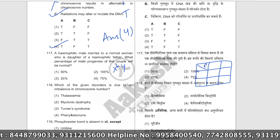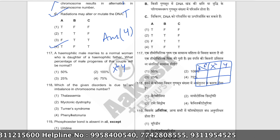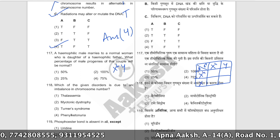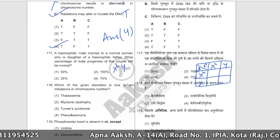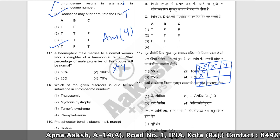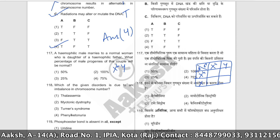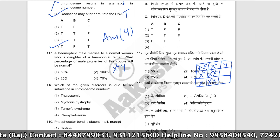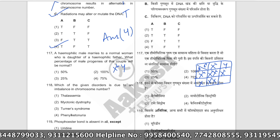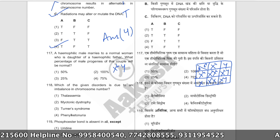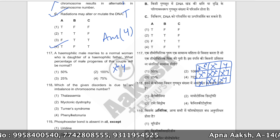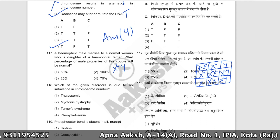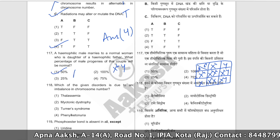The father is hemophilic and the mother is a carrier. From this cross, among the sons, half will be hemophilic and half will be normal. So 50% of male progenies will be normal. The correct answer is option number one — fifty percent.